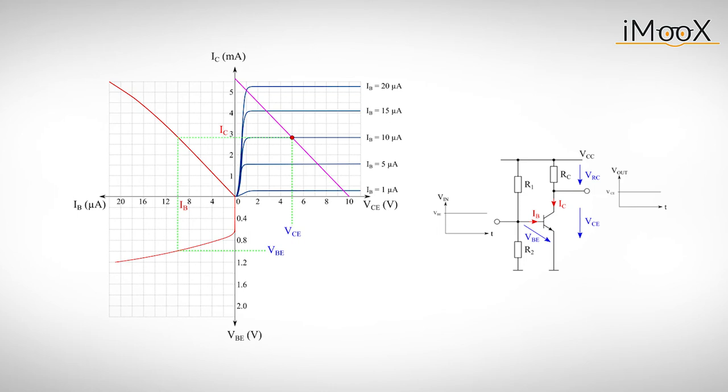First, we have to find an operating point, also known as bias point, quiescent point or in short Q point. As we already know, we simply have to adjust R1 and R2 to get a voltage drop at the base somewhat over 0.6V. This leads to a base current IB, which again leads to a collector current IC and finally to a steady state output voltage VCE.